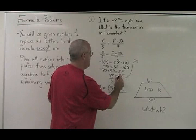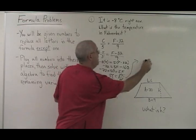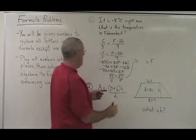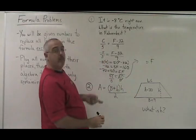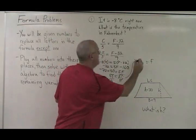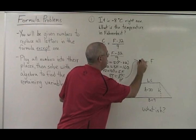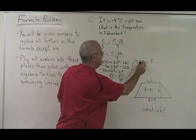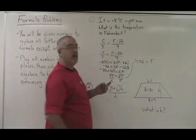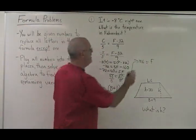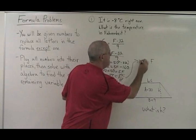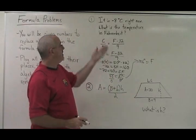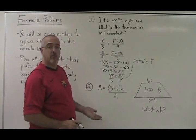Divide both sides by 5 and cancel. F equals 88 divided by 5, which is 17.6. Because it is a temperature, you want to put degrees as the unit of measure. You've finished the formula problem.